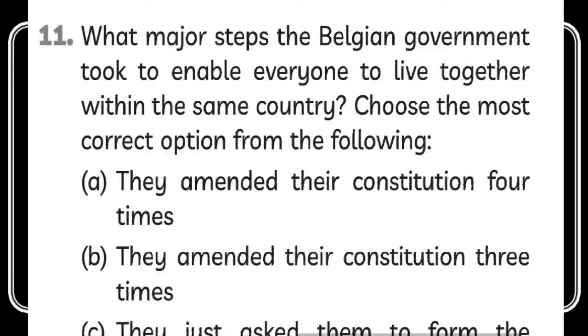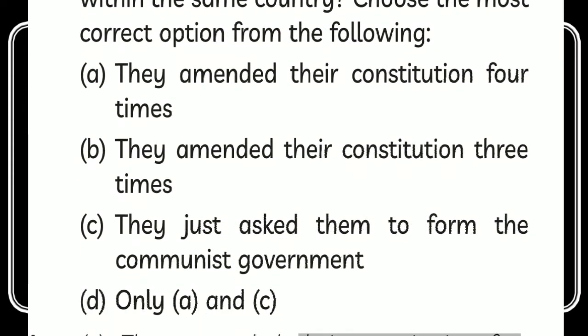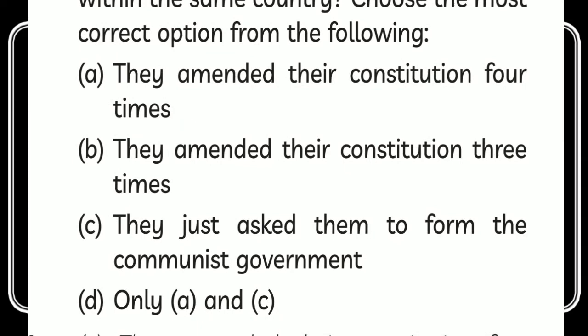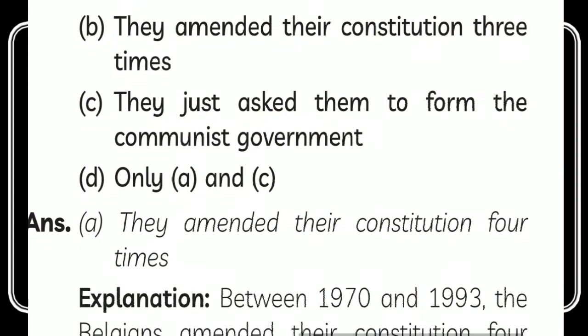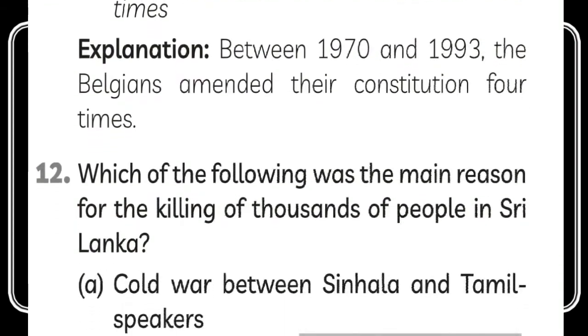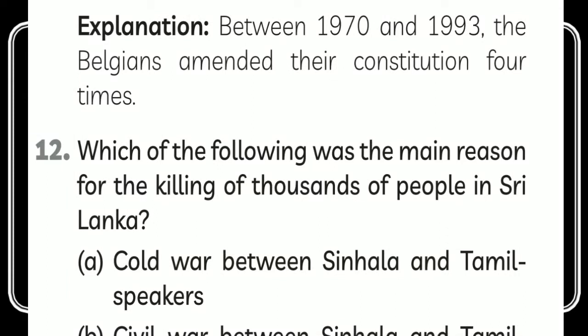The next question is: what major step did the Belgium government take to enable everyone to live together within the same country? The answer is that they amended the constitution four times. Option A is correct — they amended their constitution four times so that their unity could not be undermined. Between 1970 and 1993, Belgium amended their constitution four times.